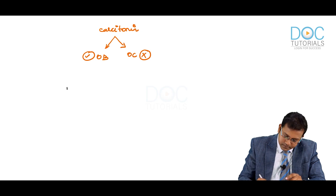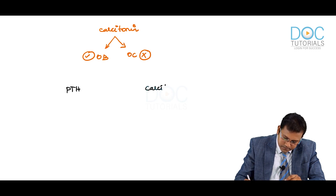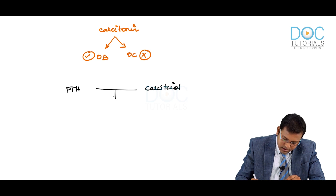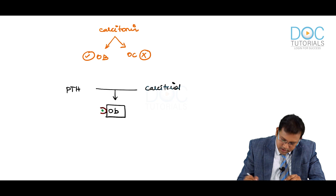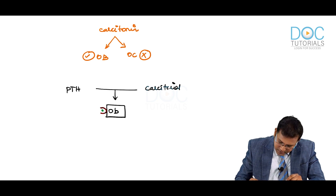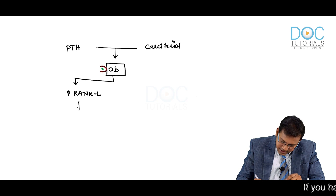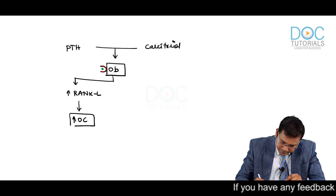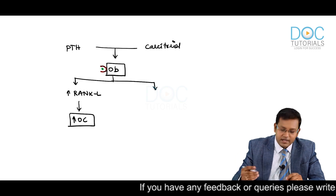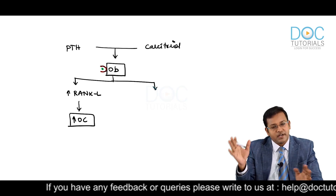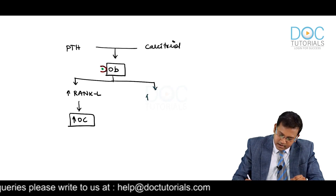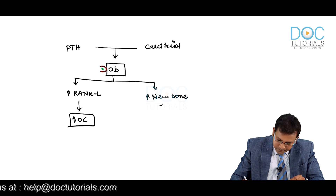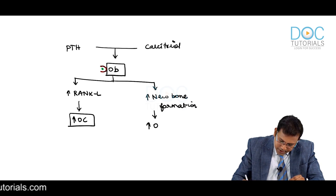Parathyroid hormone and calcitriol both act at receptors on the surface of osteoblasts. Because of this action, there is increased RANKL expression, leading to increased osteoclastic activity. However, both drugs also directly stimulate osteoblasts, so both outcomes are possible: increased osteoclastic activity or increased osteoblast activity, resulting in either increased bone resorption or increased new bone formation.